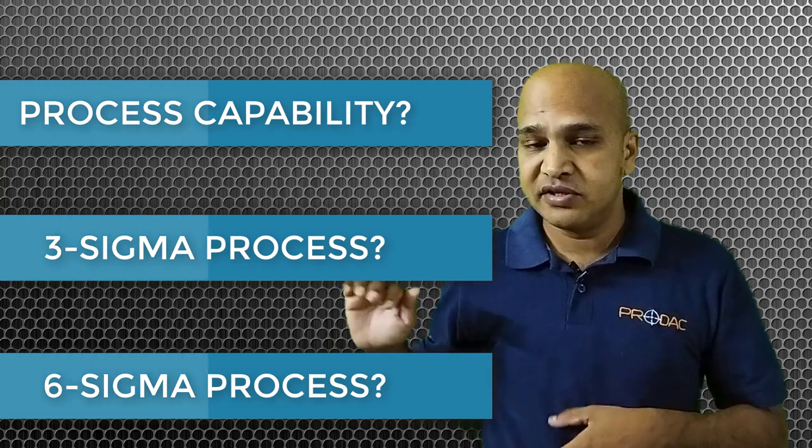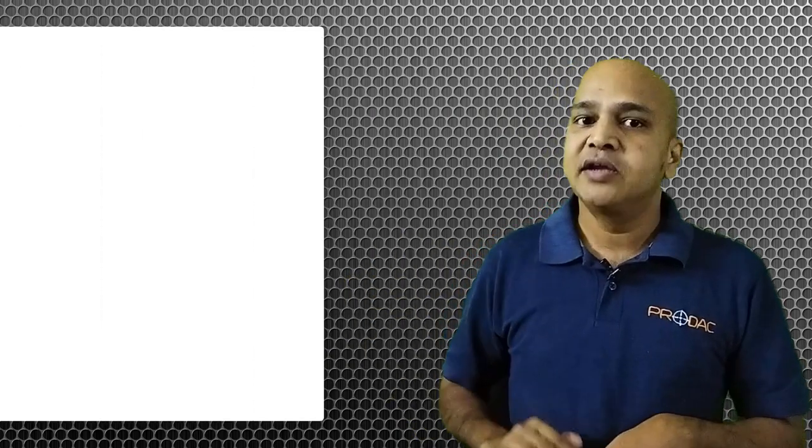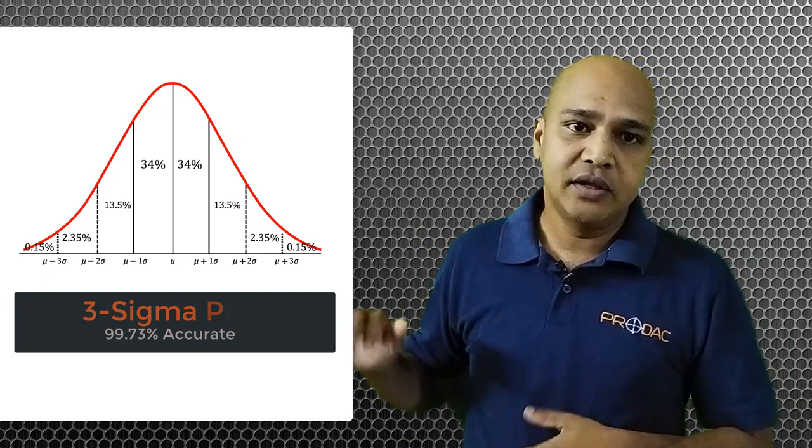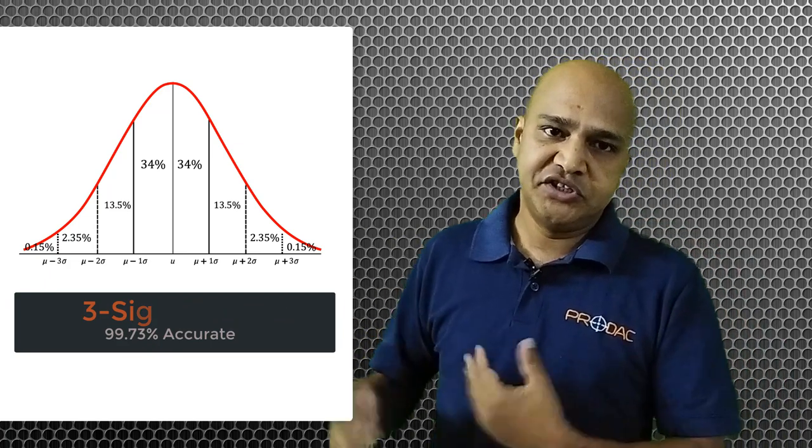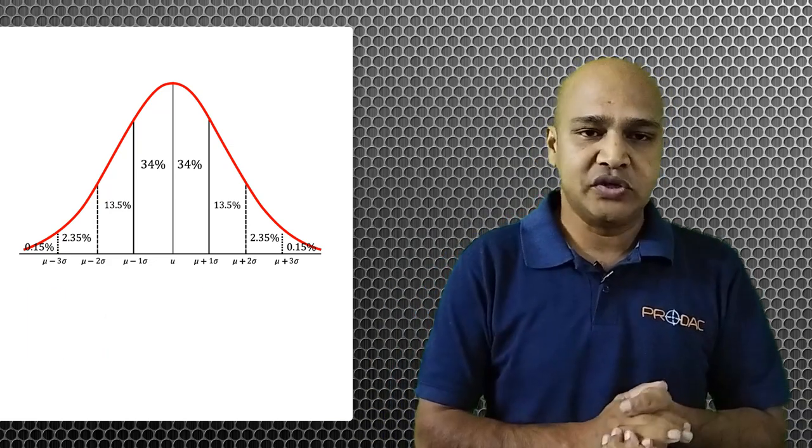The sigma level will define its defects per million. Based on that, defects will be occurring in the process, so that's how the rejections will also be happening. That will be taken care of by the process capability.